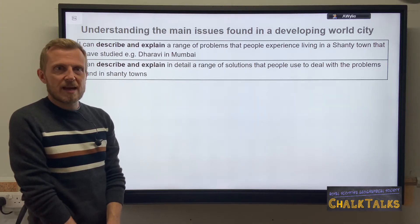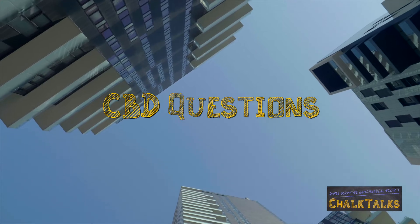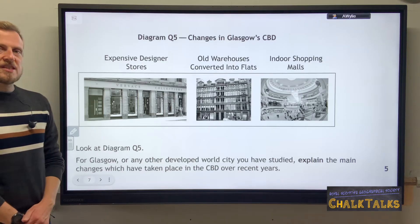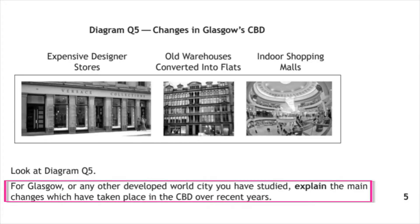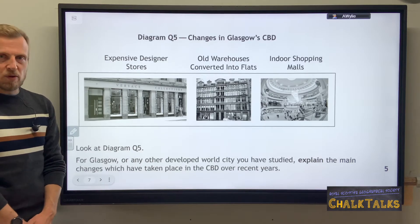Now let's have a look at some actual exam questions. In this first past paper exam question we are being asked to focus on the CBD and changes that have occurred in recent years. This question must be answered in the context of a developed world city and you must name the city. It suggests Glasgow but does say 'or any other developed world city.' The command word is explain and it is a five-mark question, so you must make sure you have five points explained.